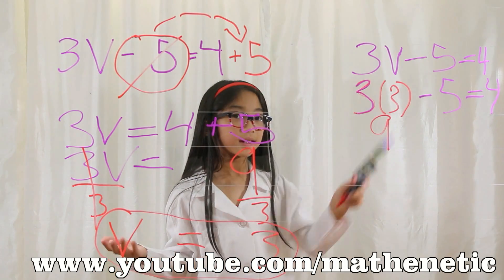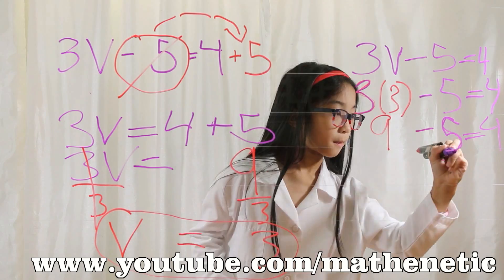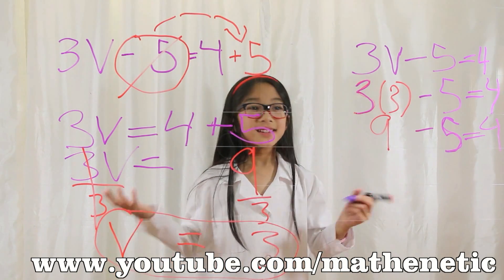And now I'm going to bring down the rest of the equation. 9 minus 5 is 4. Right? Check!